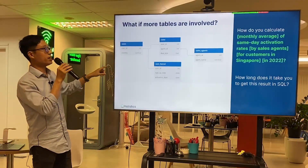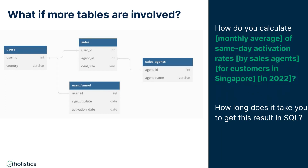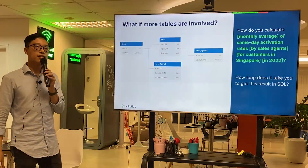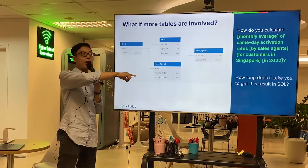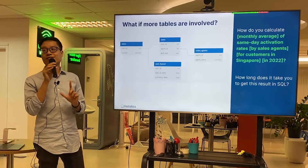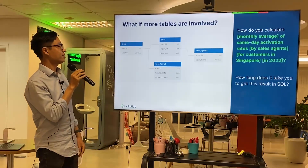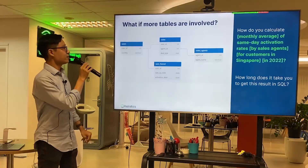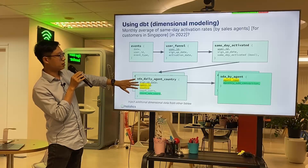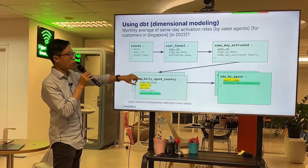Here's a more complex example. How do you calculate the monthly average of same-day activation rate by sales agent, for customers in Singapore, in 2022? How long does it take to write that SQL? You need to figure out what to JOIN, where to aggregate, where to filter. Even with ChatGPT, you get something that looks correct but isn't — and you need to debug it.